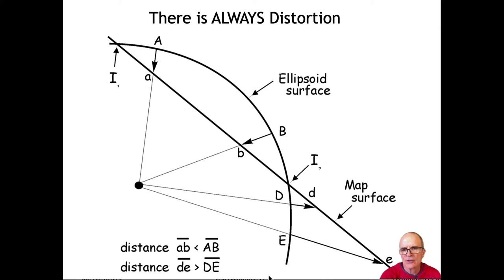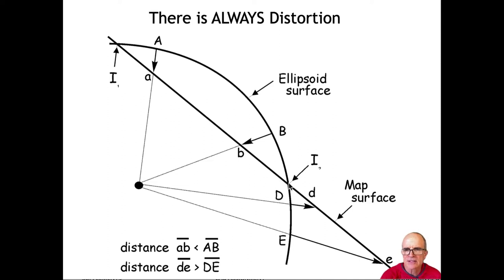There's always distortion. Here's a side view of an intersecting surface and the globe — the ellipsoid we're using. Inside the bulge on the two edges where there's intersection, we're compressing everything: this length gets compressed to a shorter length. Outside the intersection, we're getting expansion — things get pushed further apart. The distance between points d and e on the map is much bigger than between d and e on the earth. Right around the intersection, we have the least distortion.